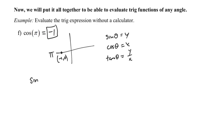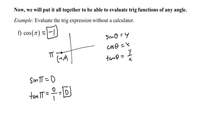What if I asked you what sine of pi was? Sine of pi would be the y-coordinate of that point, which is zero. What if I asked you for the tangent of pi? That would be y divided by x, which is zero divided by one — in this case, zero.